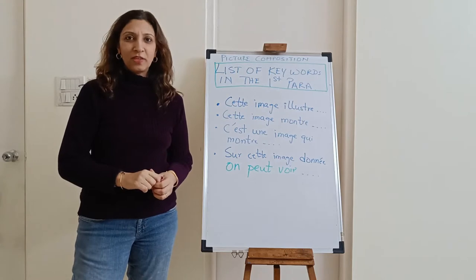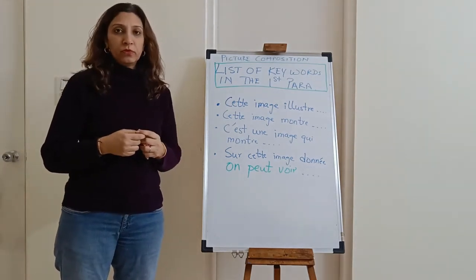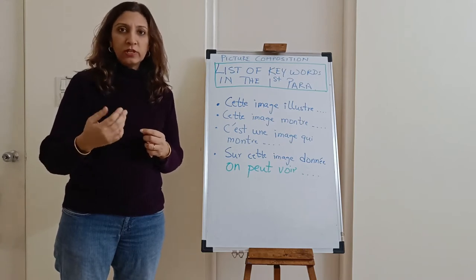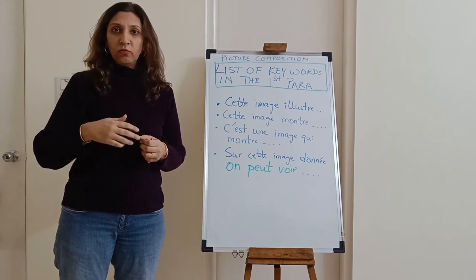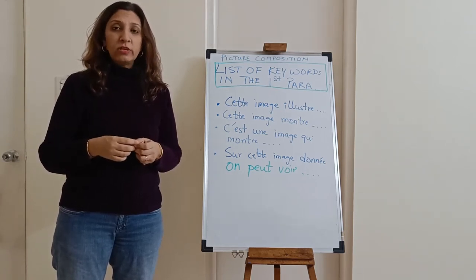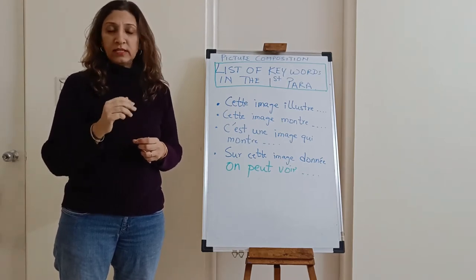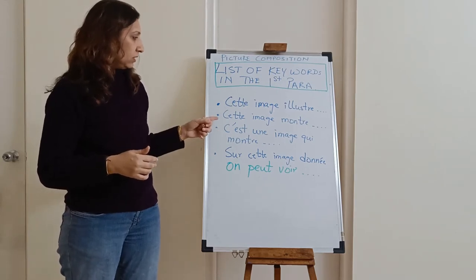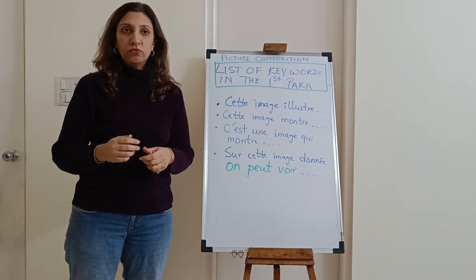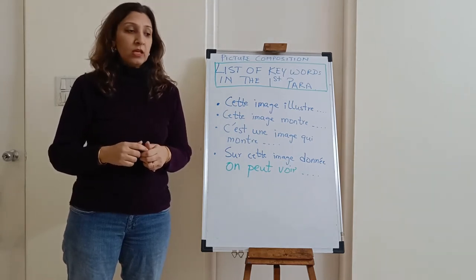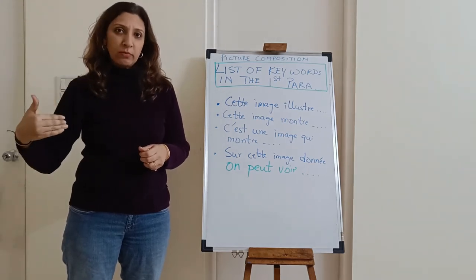Now let's start with the first paragraph. It needs to use key opening phrases. 'Cette image illustre' means 'this picture illustrates or shows.' 'Cette image montre' means 'this picture shows.' 'C'est une image qui montre' means 'this is a picture which shows.' 'Sur cette image donnée, on peut voir' means 'in this given picture, one can see.' For example, 'cette image montre un parc' or 'sur cette image donnée, on peut voir un jardin,' and then you continue describing it in detail.